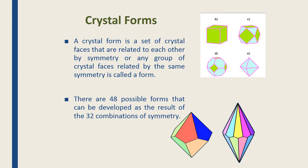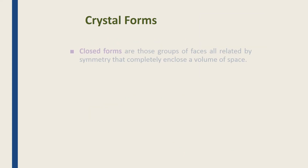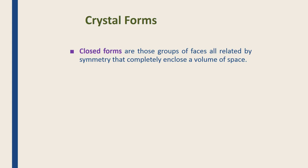There are two types of crystal form: closed forms and open forms. A closed form means the faces are related together by symmetry and they can enclose a volume of space — they can close it.